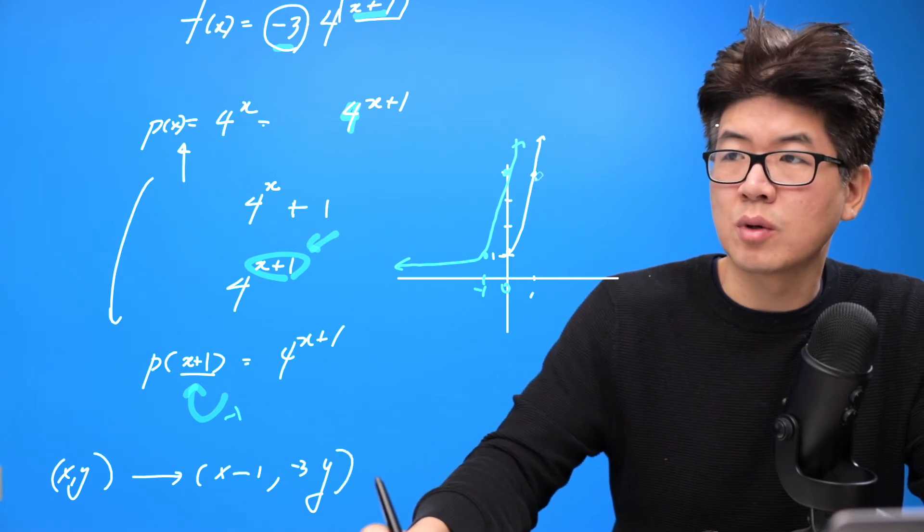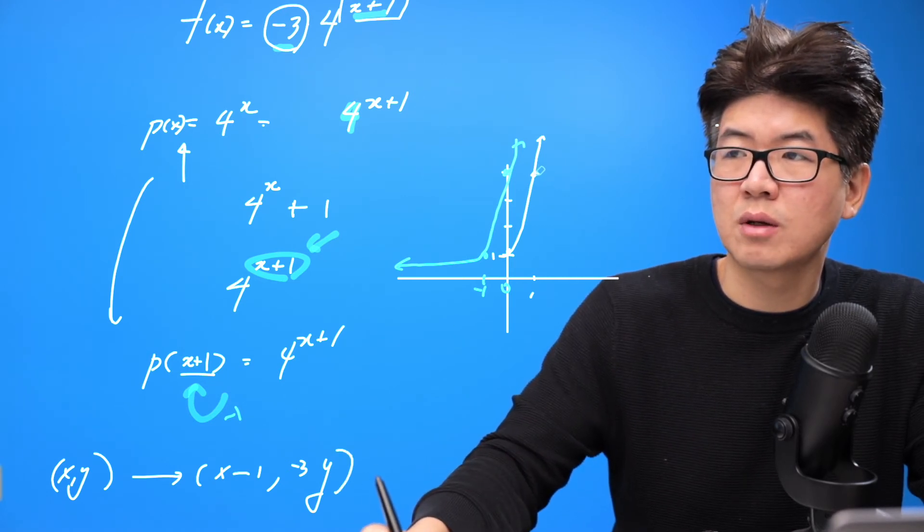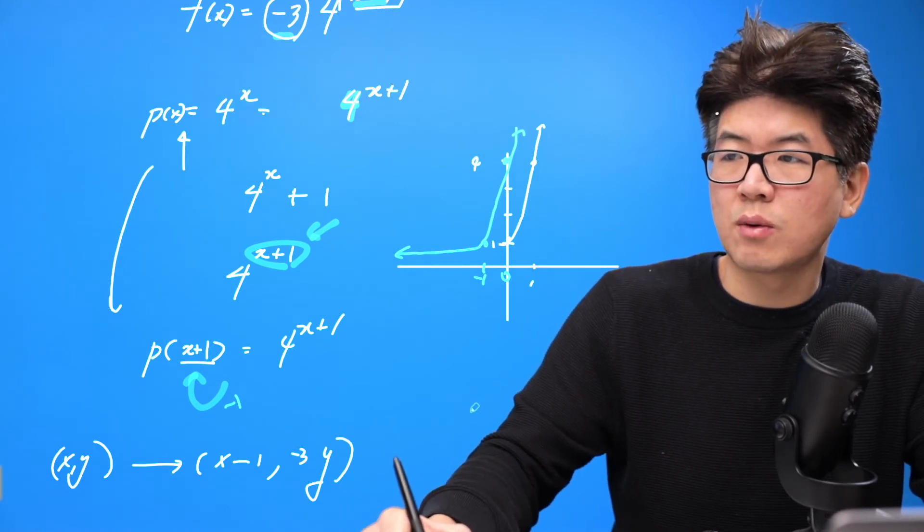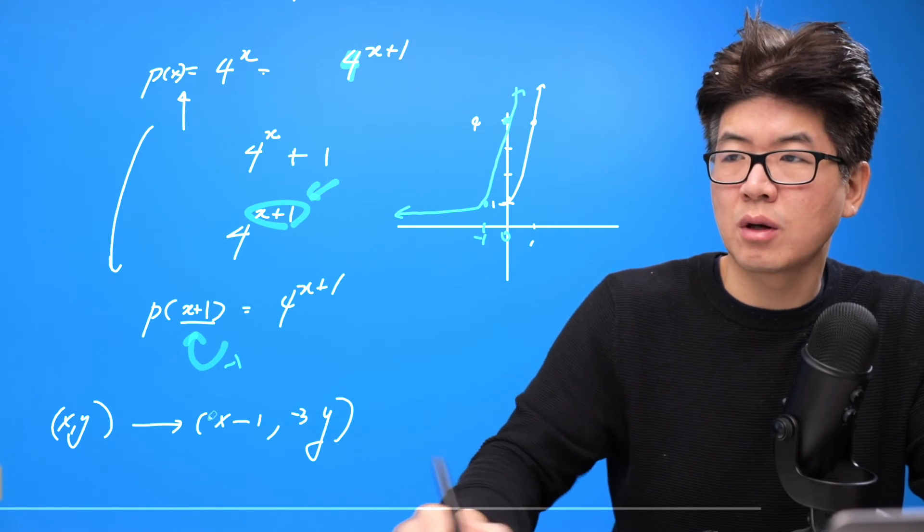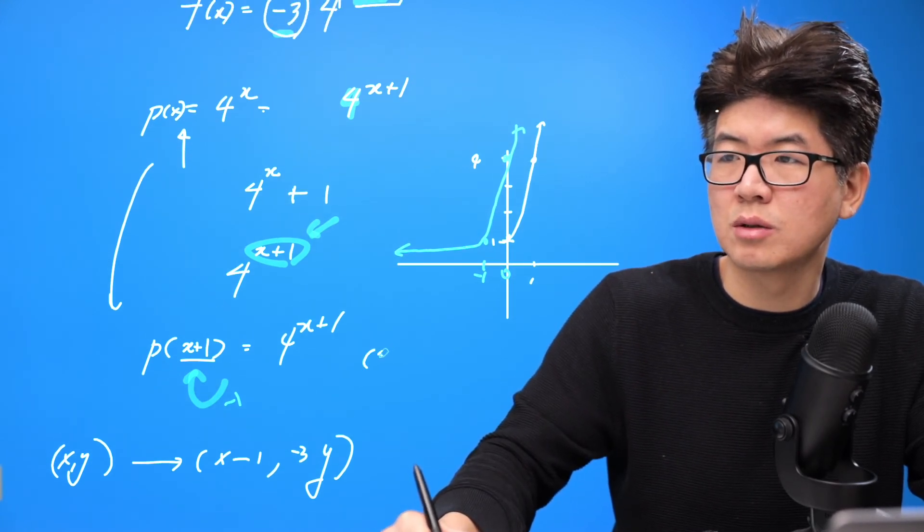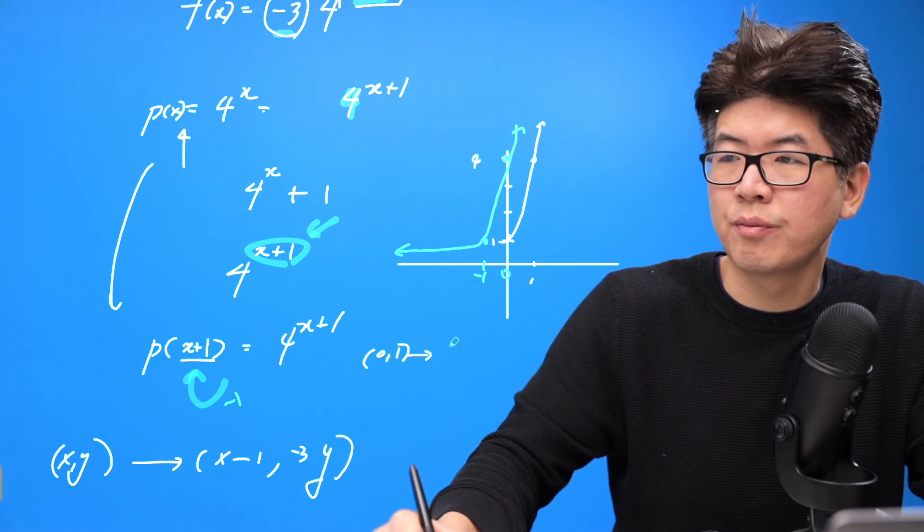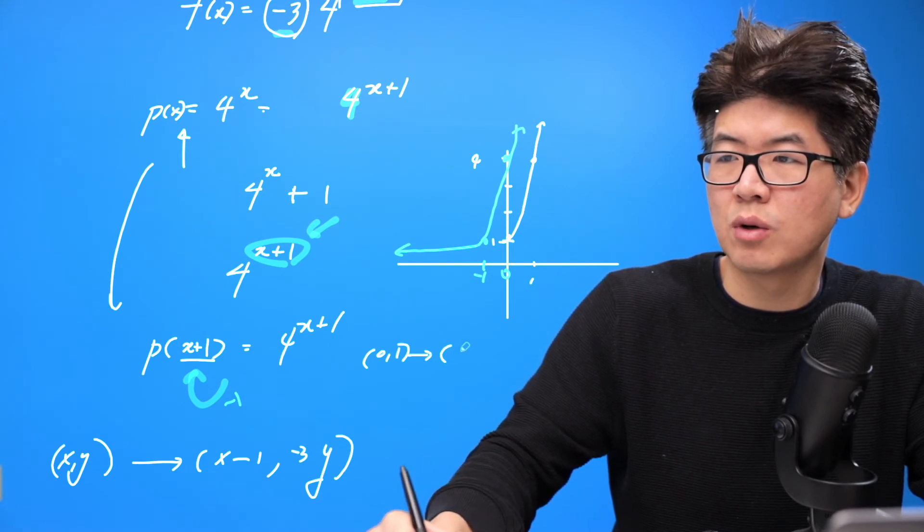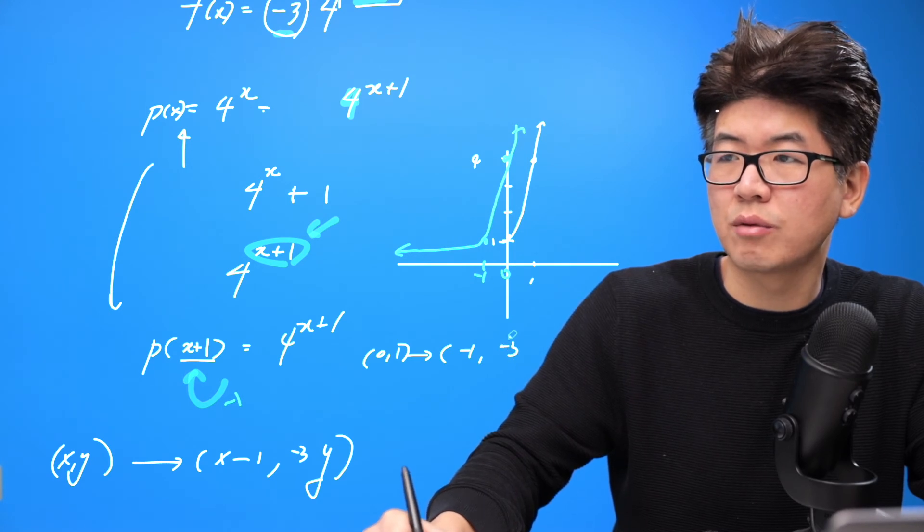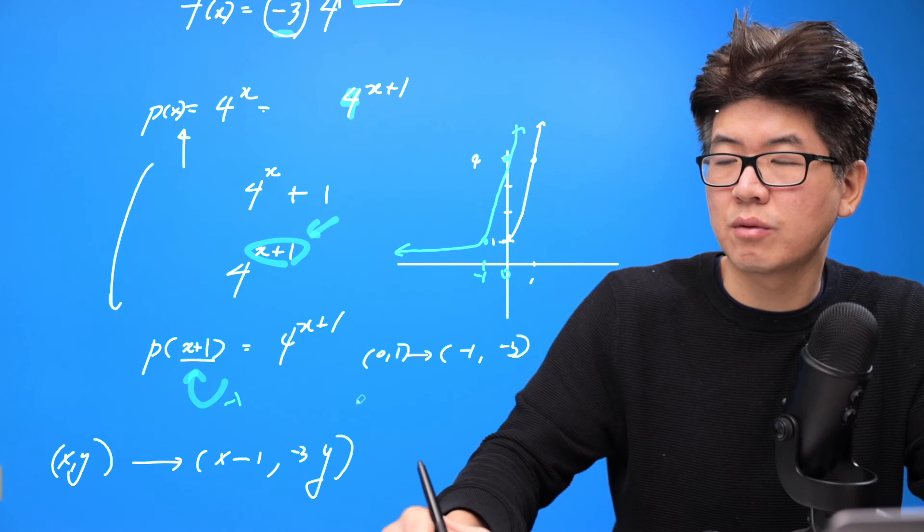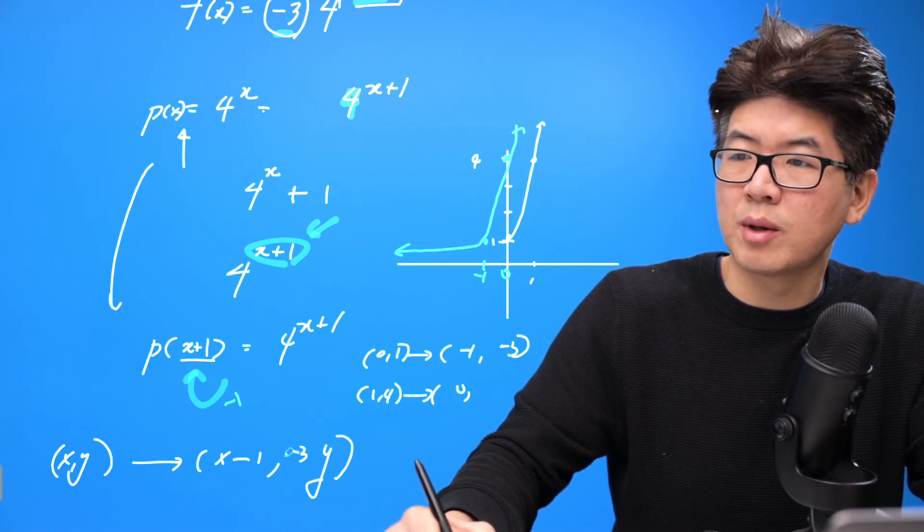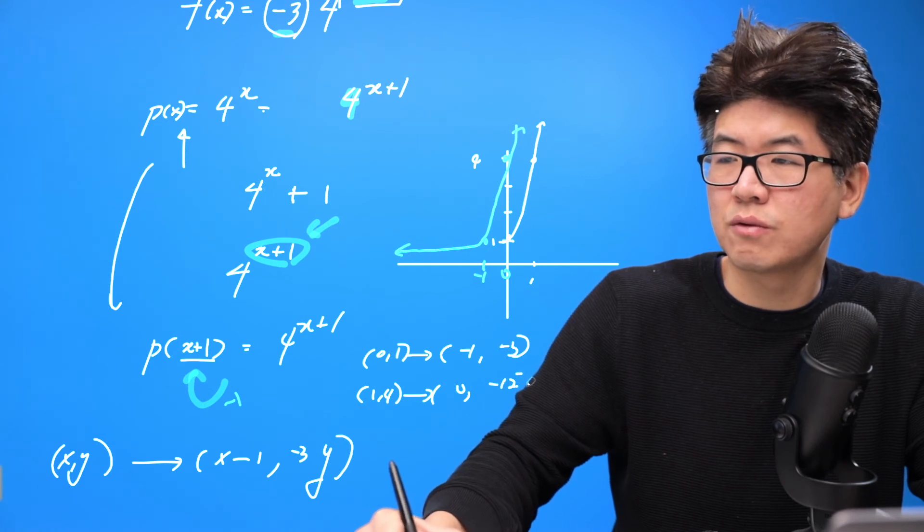So for example, this value of four needs to be negative 12. Right? So our final function, okay, so let's see here, we grab zero one, zero one will become negative one, negative one, negative one, and negative three, right? So we need to go down negative three, one is four, so it's zero, and multiply by negative three is negative 12.